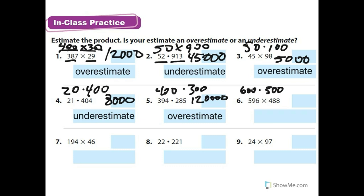Did 600 times 500. 6 times 5 is 30, and 1, 2, 3, 4 zeros. Remember, that zero in the 30 does not count against the four zeros here — it's its own zero. So that's 300,000. And it is an overestimate.